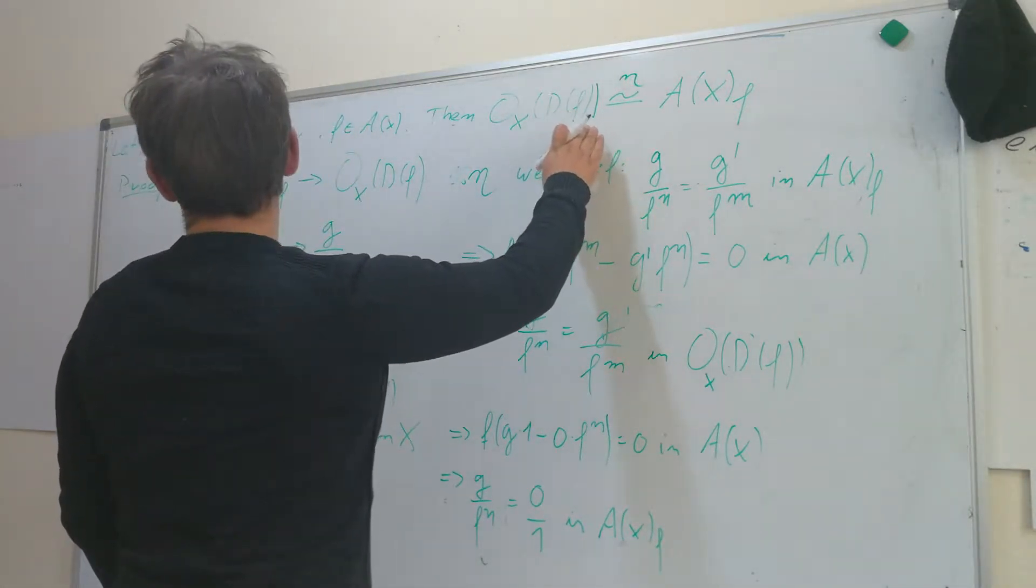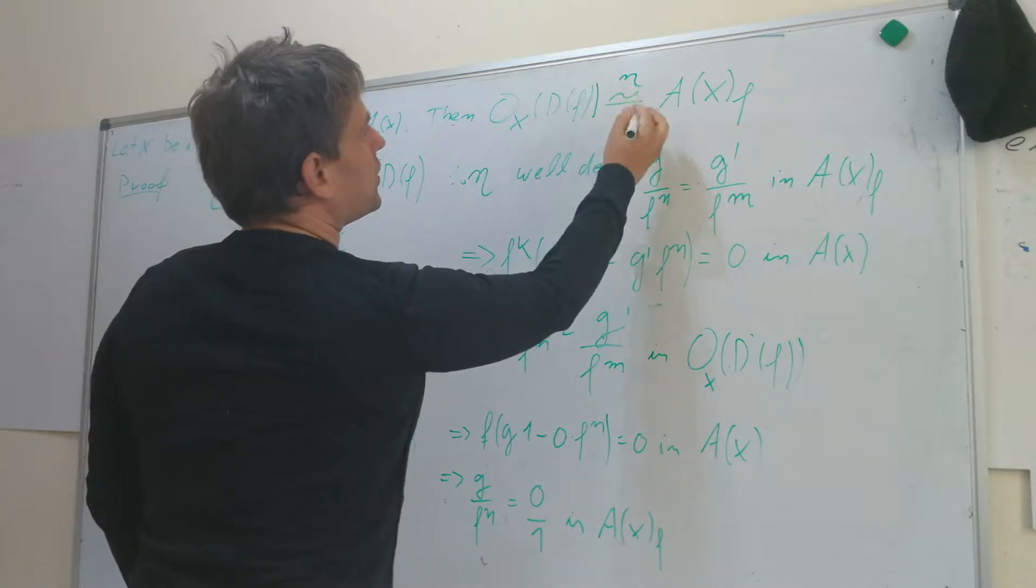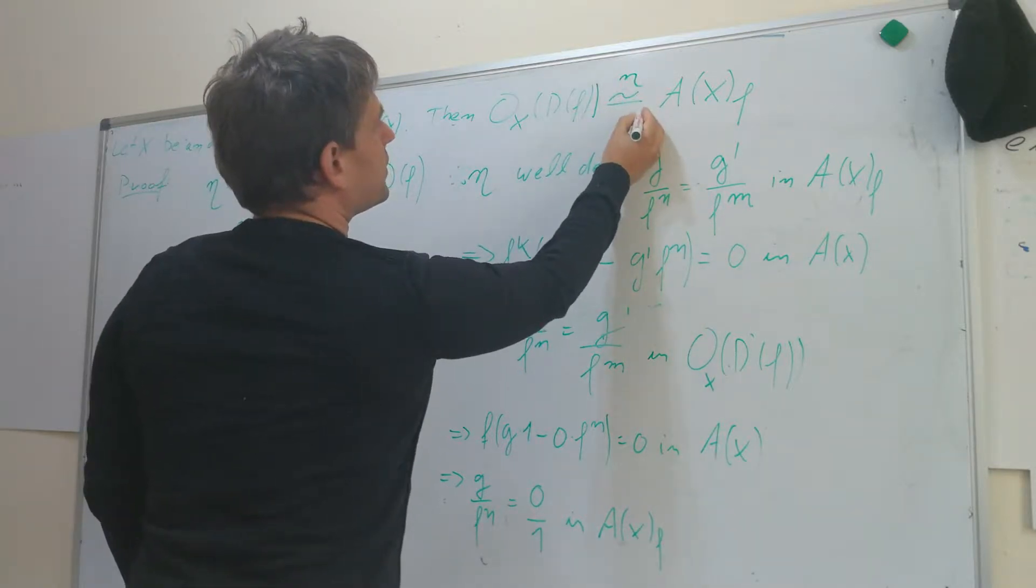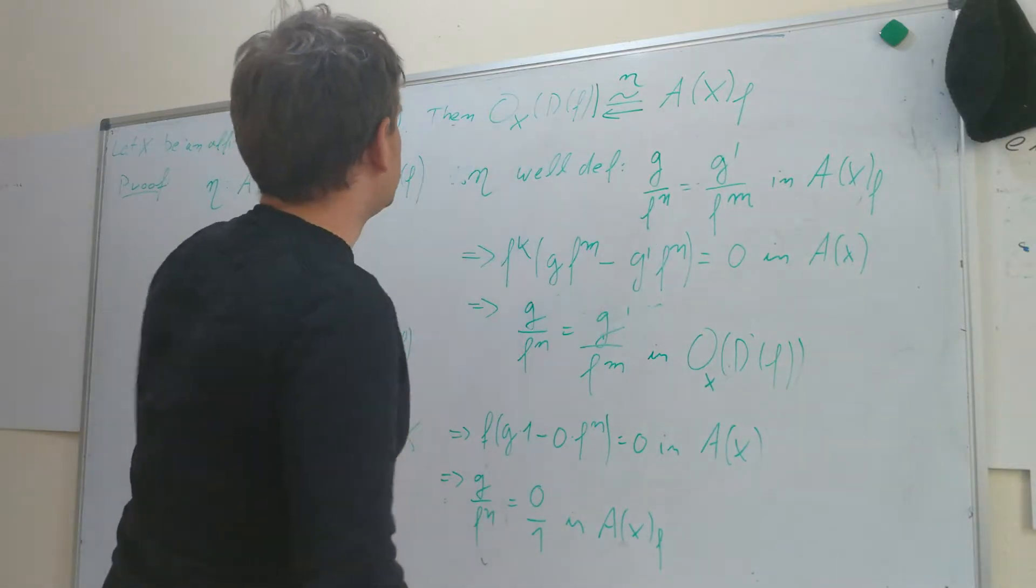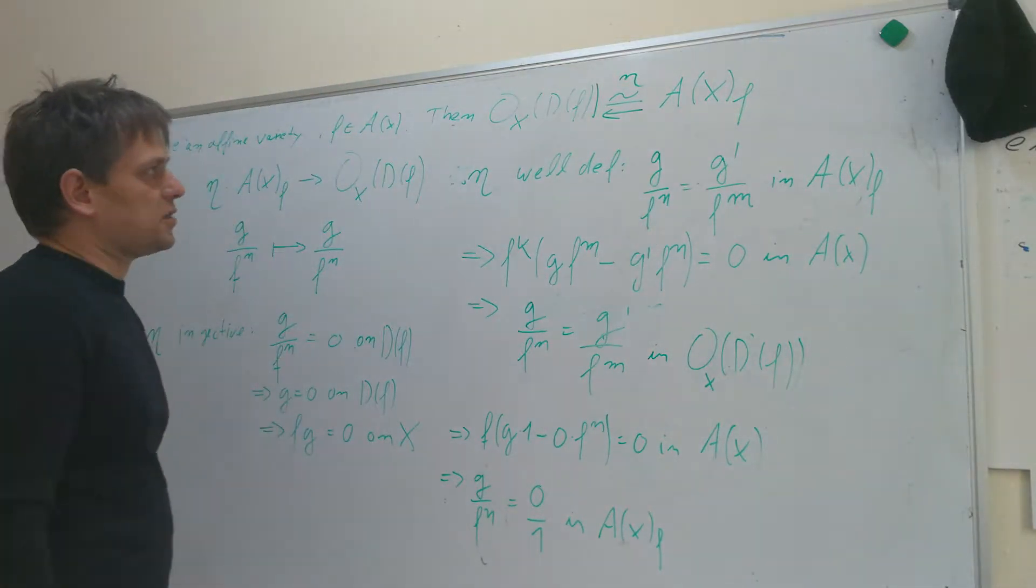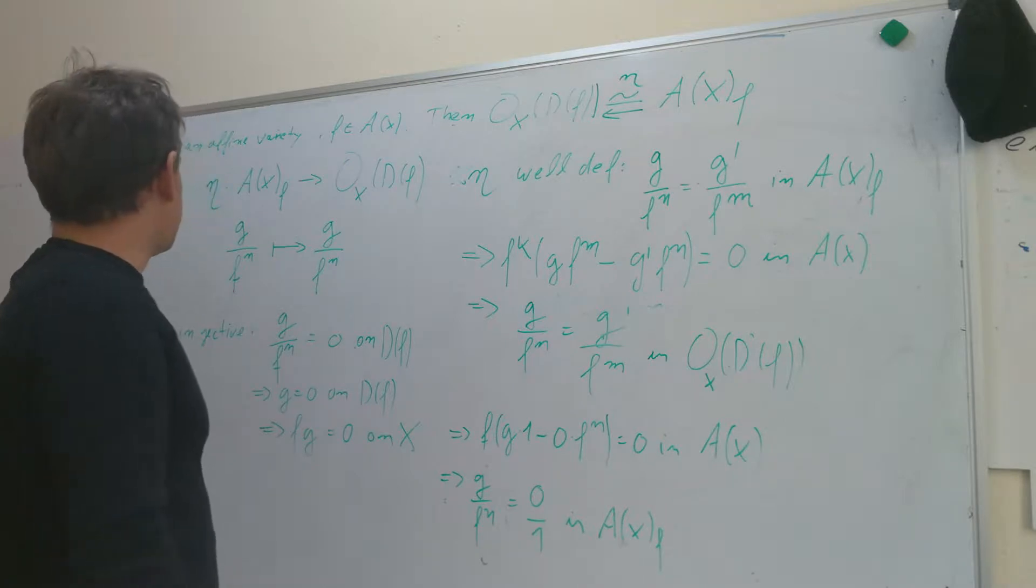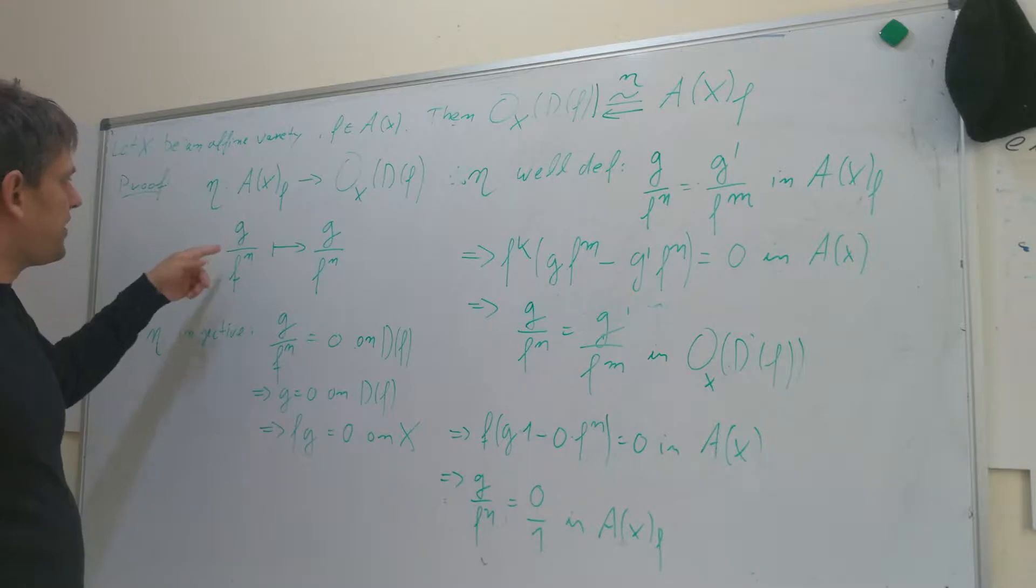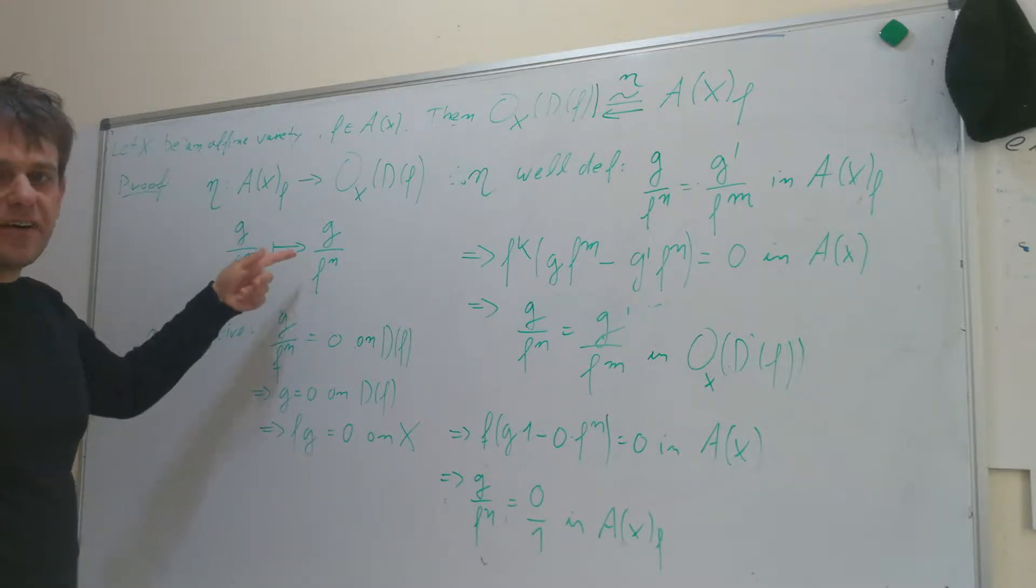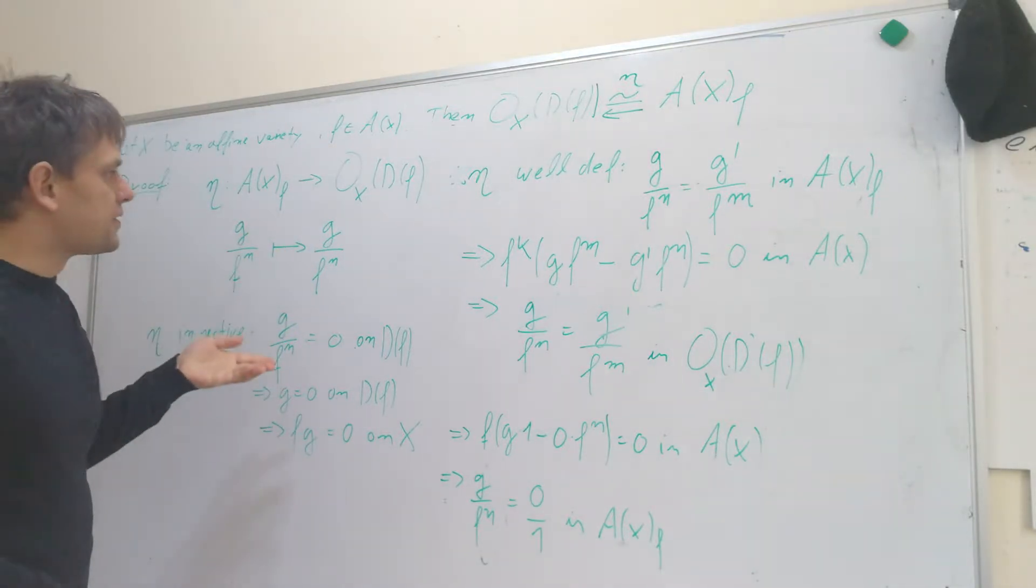We're going to call eta this map from Ax localized at f to the k-algebra of regular functions on df. Eta is easy to define. Namely, we just send g/f^n, g divided by f^n, to g divided by f^n.